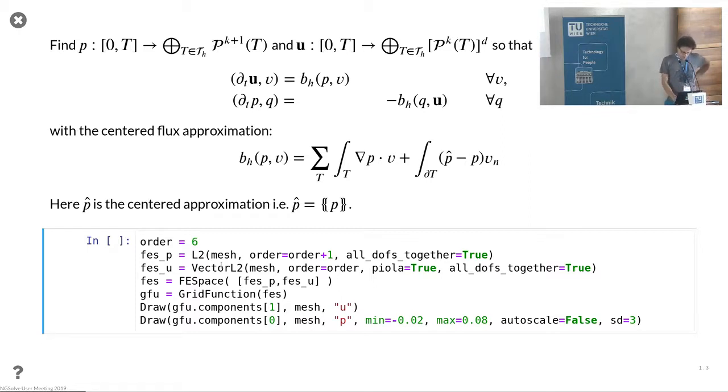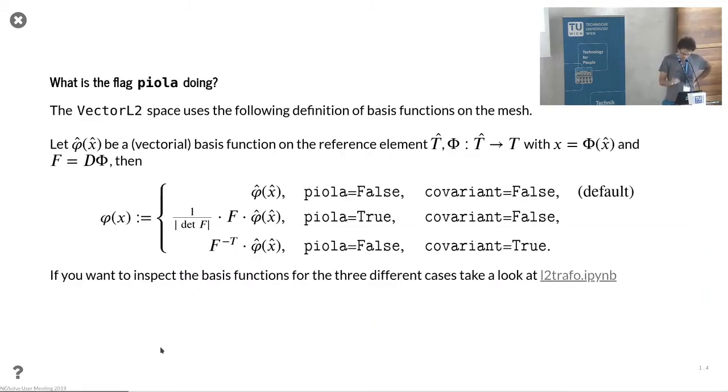We use a discontinuous vector L2, which is the vector valued version of the L2 function. Now we have the flag piola, so we have the piola mapping that we need in order to get something which is geometry free.